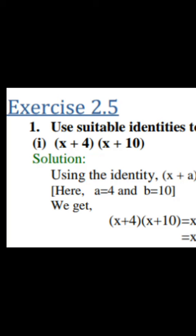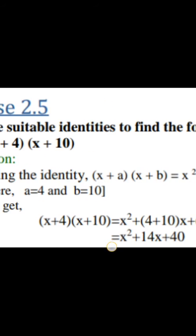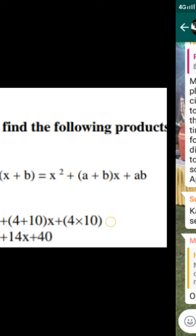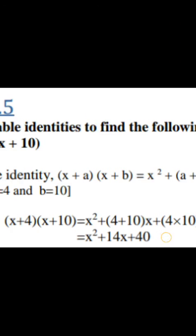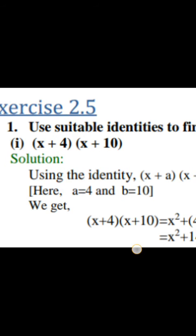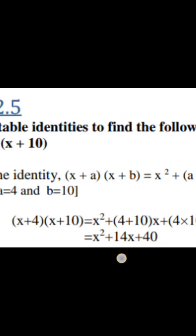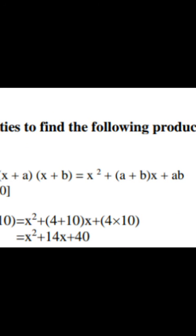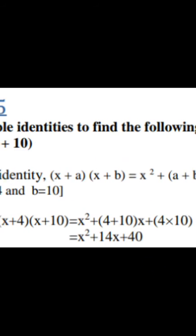Today we are going to discuss exercise 2.5 class 9th, so let us start. First question is use suitable identities to find the following products. You have to use the identities and multiply these two expressions. So you have to solve (x+4)(x+10). You have to use the identity (x+a)(x+b) = x² + (a+b)x + ab.